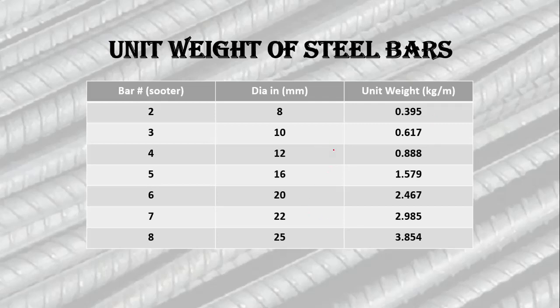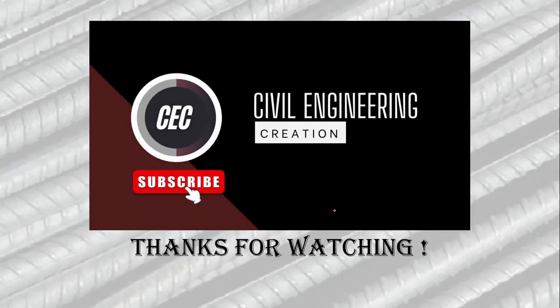Here we have a table of different bar numbers with their diameters and unit weights, calculated using the formula d² / 162.162. That's today's lecture — thanks for watching.